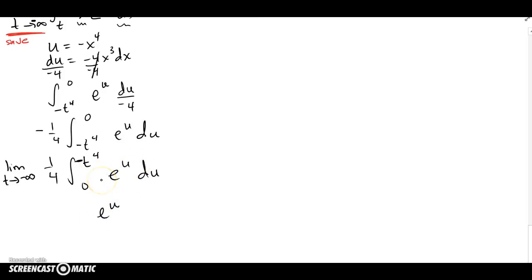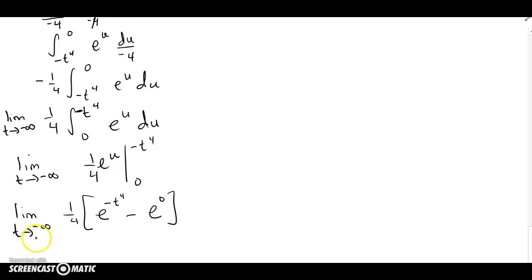And since I already chose to change my limits of integration, I don't have to go back to x's. So let's analyze that from 0 to -t^4. So I got the limit as t goes to negative infinity of this guy. I put in the -t^4 and e^0. This guy, we already know, is just 1.